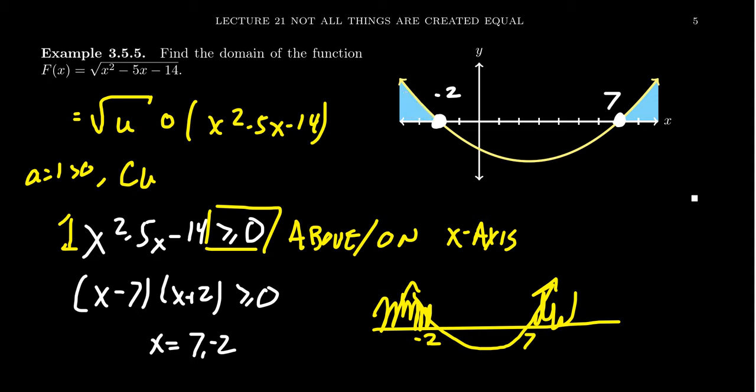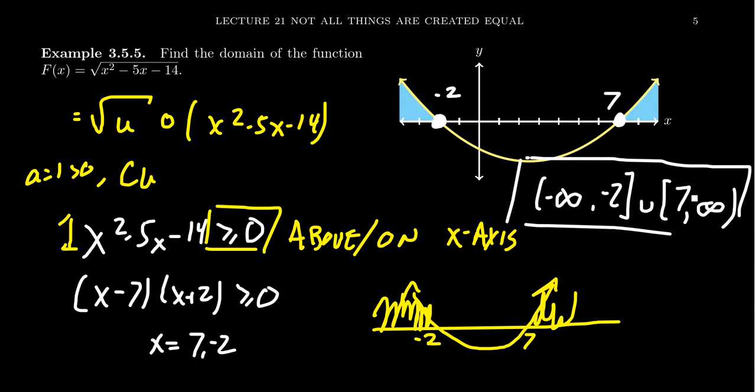And so that then tells us that the domain of our function would be negative infinity to negative 2. Negative 2 is included because if I plug in x equals negative 2, I'm going to get the square root of 0, which is 0. And then there's a big gap where there's nothing. The function is not defined for this region because we're taking the square root of negative numbers, which are not real numbers. And then you're going to union once you get past that desert in the domain. You'll then pick up where you left off, 7 to infinity, where 7 will be included inside of the domain. The markers are included because the square root of 0 is included.